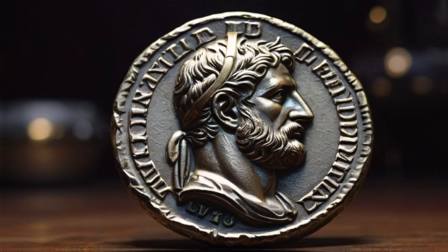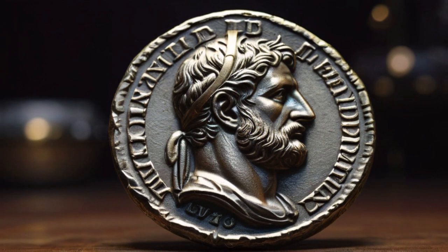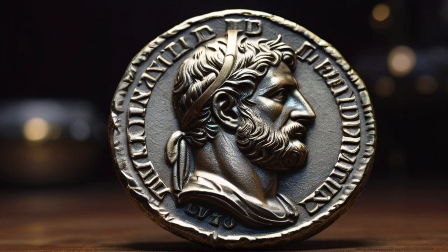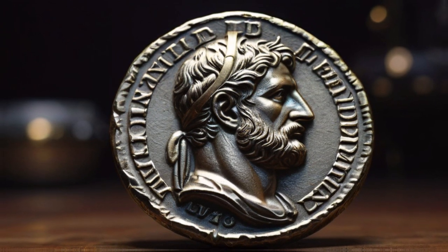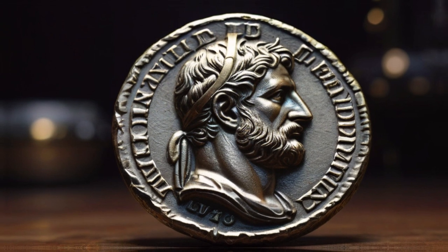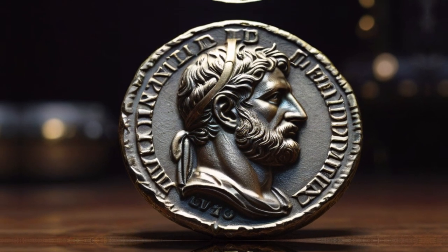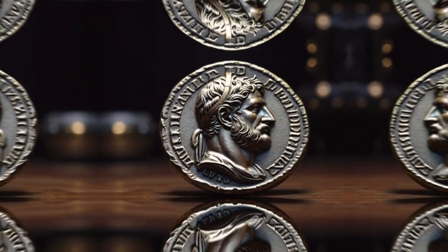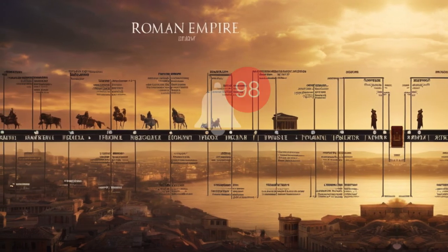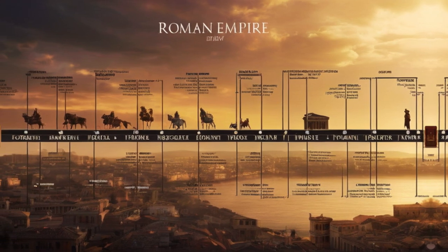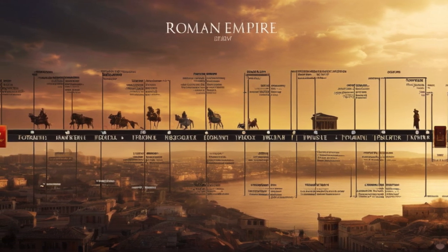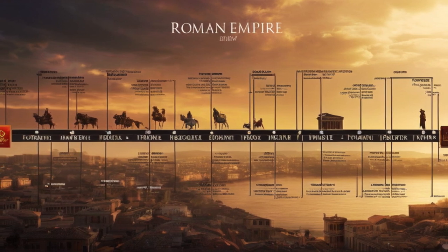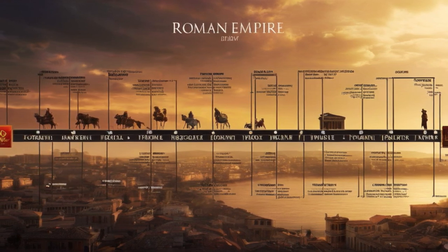The last hope for the West was a general named Aetius, who fought bravely against the barbarians and even allied with some of them. He faced the greatest threat of his time, the Huns, led by the fearsome Attila. The Huns were a horde of warriors who swept across Europe, destroying everything in their path. They demanded tribute from the Romans and threatened to invade their lands. In 451 AD, Aetius and his allies faced Attila and his army at the Battle of the Catalonian Plains, near Chalons in France. It was one of the largest and bloodiest battles in history. The outcome was inconclusive, but the Huns were stopped from advancing further into Gaul. The next year, Attila invaded Italy, but was persuaded to leave by Pope Leo I, who appealed to his superstition.